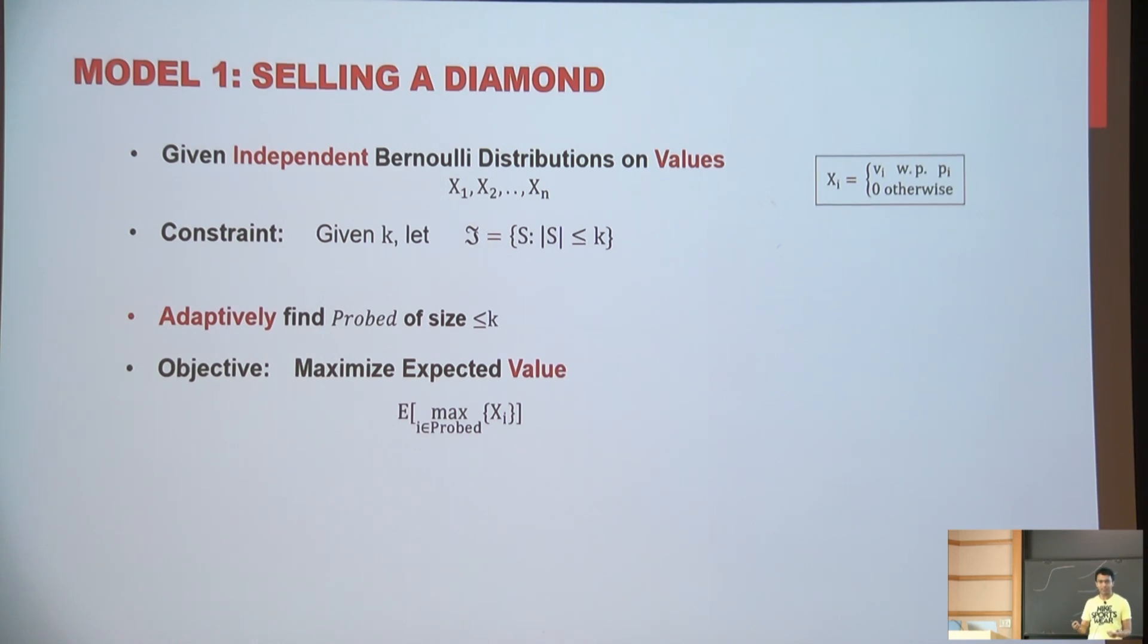And the main point is you can select these 10 buyers adaptively. So you go to the first buyer, depending on how they behave, you may choose who's going to be my next buyer, and then the third buyer. So you can also think of this as a decision tree of height the same as your budget k. So you first go to buyer one, depending on whether they like or don't like it, you may go to buyer five or buyer two and so on. So it's some kind of a decision tree.